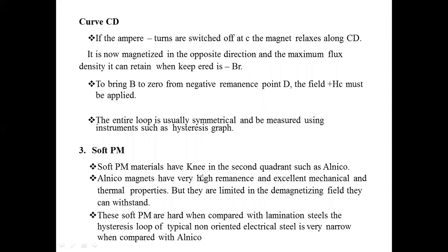By choosing these types of materials for motors, we get better applications at any temperature, even greater than 100 degrees Celsius. This concludes today's class on permanent magnetic materials and the comparison between mechanical and electronic commutators. In the next session, we will discuss the principle of operation and go further into square wave permanent magnet DC motors. Thank you.